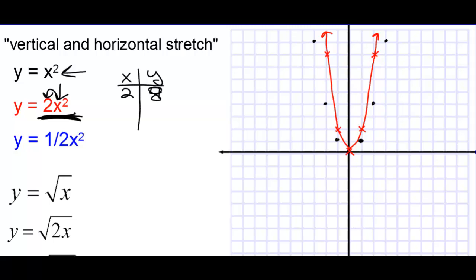With the blue one, we're going to take all those y-values and multiply by one half. Half of 0 is 0, half of 1 is one half, half of 4 is 2, and half of 9 is 4 and a half. This is shrink vertically by a factor of one half.